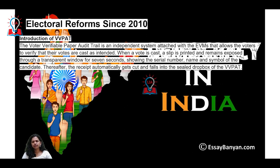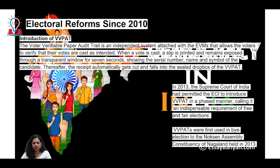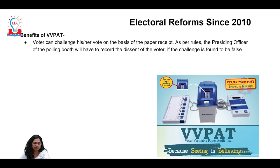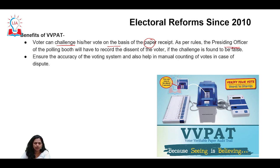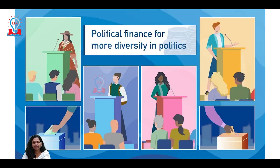A novel feature introduced to check bogus voting and ensure no tampering with EVMs is VVPAT — Voter Verified Paper Audit Trail — an independent system whereby you get a note confirming your vote has gone to the right person. Introduced in a phased manner, VVPAT allows the voter community to challenge their vote based on the paper receipt, with the presiding officer noting it at the time of voting, enhancing transparency and accuracy in the election voting system.